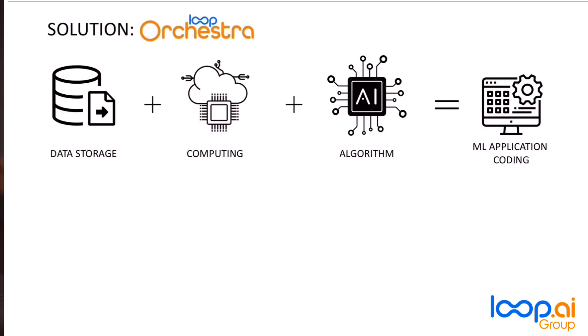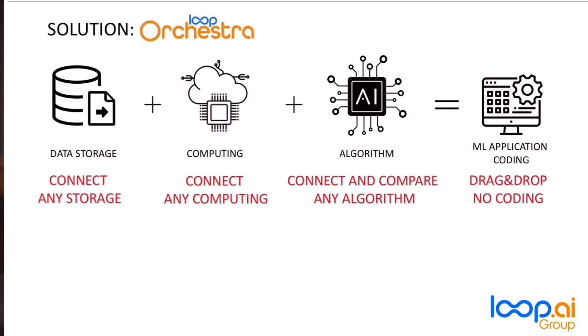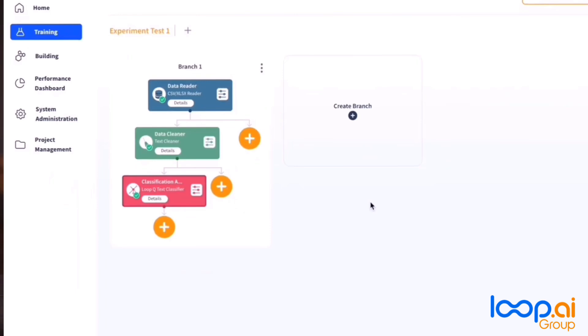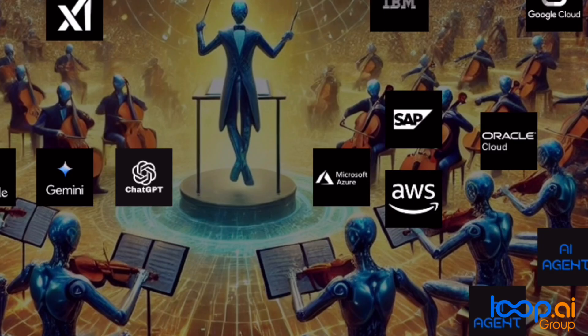Since 2019, Loop Agent Orchestra has served as a powerful AI agent control center built on the expertise of Loop AI Labs, the first enterprise AI company founded in 2012. The platform eliminates coding complexity, integrates with diverse machine learning technologies, and enables rapid prototyping, deployment, and real-time optimization by replacing underperforming algorithms in each AI agent component.